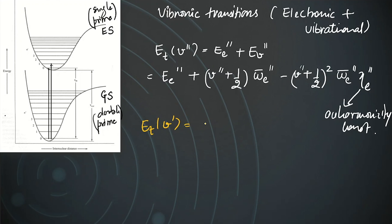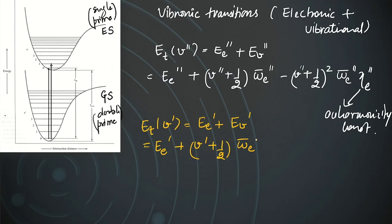The anharmonicity constant is ψ_e. Similarly, we write the total energy level for the excited state: the electronic energy E_e prime plus the vibrational energy. The vibrational frequency ω̄_e and ψ_e both depend on the electronic state, so the ground and excited states have different values of these parameters.